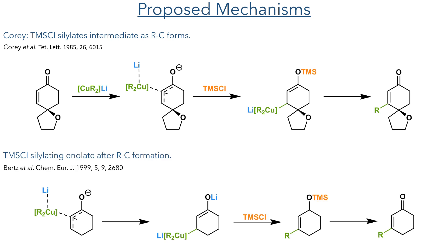The most recent work on this reaction has come from the group of Stephen Berths, who had previously worked on this reaction with the Snyder group. His group carried out very careful synthetic studies and plotted reactivity profiles for this reaction under a range of conditions. The mechanism he proposes is similar to that proposed by Corey, where the TMS chloride acts as a silylating reagent. Unlike Corey, he suggests that this happens after the conjugate addition, and that the TMS chloride reacts with the metal-bound enolate. It is noted that the TMS chloride could be acting in several different ways, and that its function as a Lewis base may also be important.